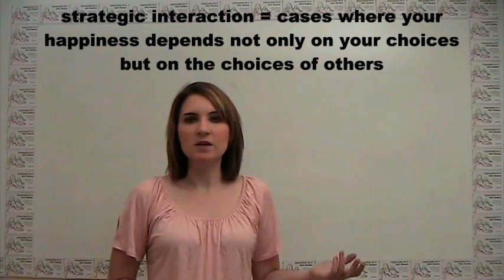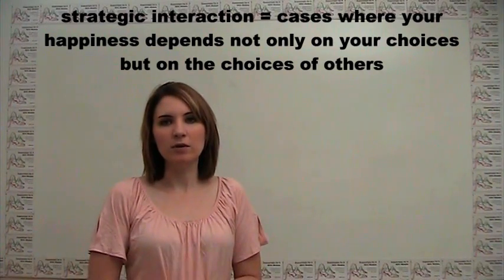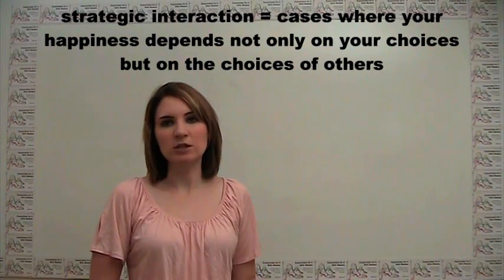...but it also depends on the choices of other people in your market, in your industry, and so on. Typical examples of strategic interaction usually involve decisions among firms regarding whether to cooperate or compete. We're going to go over an example known as the prisoner's dilemma, where people are deciding whether or not to confess to a particular crime.